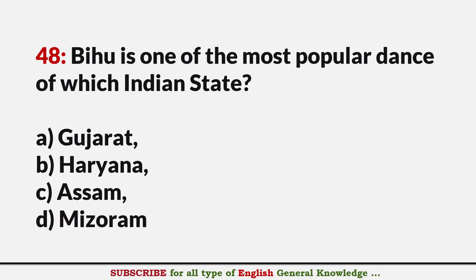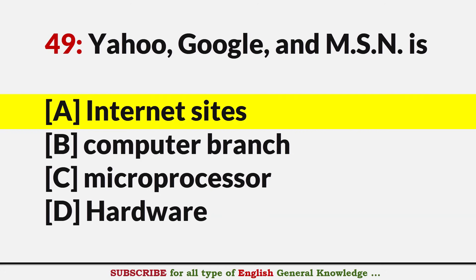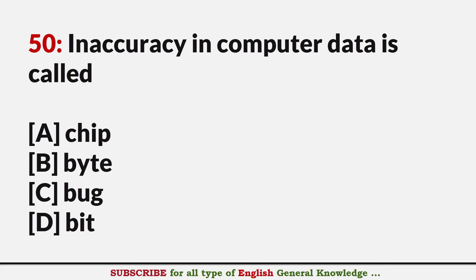Bihu is one of the most popular dances of which Indian state? Answer C: Assam. Yahoo, Google, and Amazon are? Answer A: Internet sites. Inaccuracy in computer data is called? Answer C: Bug.